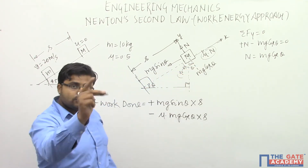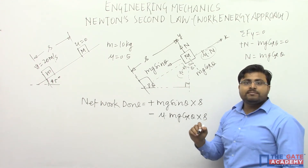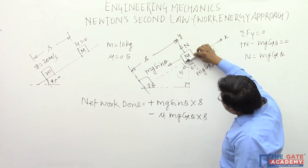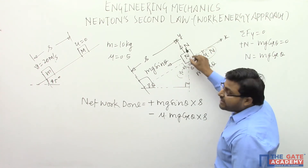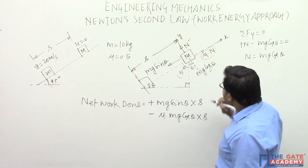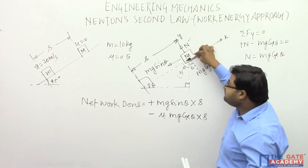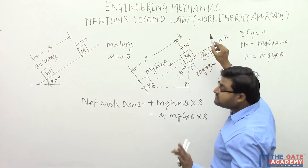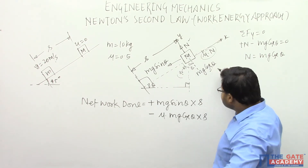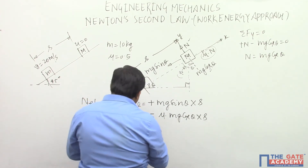There are two other forces: the normal reaction N and the m·g·cos θ component of weight perpendicular to the plane. The block has no displacement along the y-direction (perpendicular to plane), so no work is done by either the normal reaction or m·g·cos θ. Work done by these two forces is zero. So the net work done is just the sum from m·g·sin θ and frictional force.